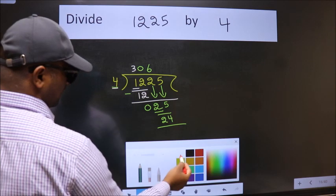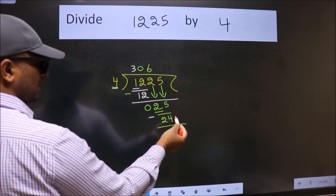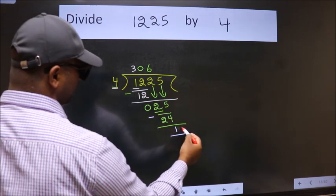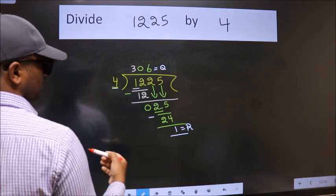Now we subtract. We get 1. No more numbers to bring down. So we stop here. This is our remainder, and this is our quotient.